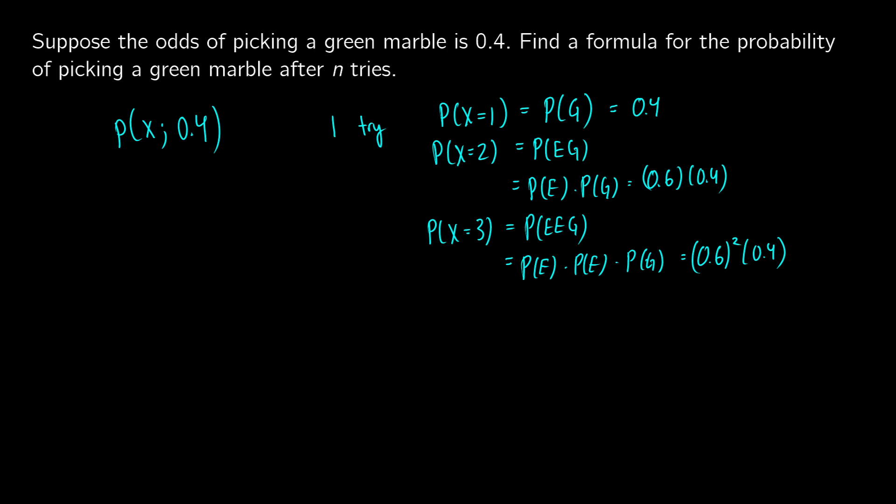We can start to generalize a little bit. What we notice is that if we're going for 3, we have 3 minus 1 failures and 1 success. So if we're looking at p of x equal to n tries, we're going to get the probability of e, and we're going to have n minus 1 of these something else's, followed by the probability of g. This basically gives us probability of e times dot dot dot times the probability of e times the probability of green. So we have n minus 1 of these, and then 1 probability of green.